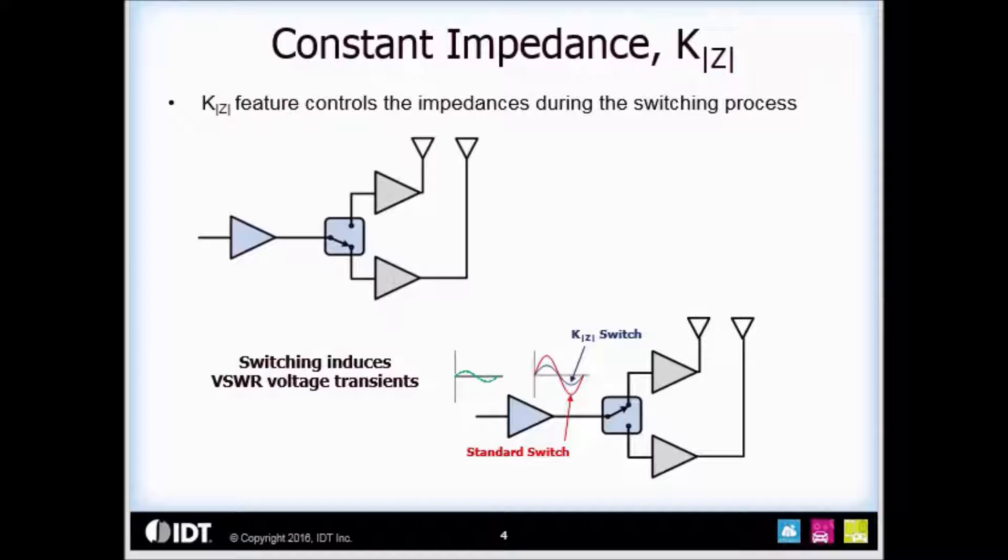In addition to VSWR transient stressing other components, it will also create a voltage stress on the switch itself, possibly damaging it or reducing its reliability. A K|Z| switch highlighted in blue maintains near constant impedance when switching between RF ports, minimizing the VSWR transient or stress on the switch itself.